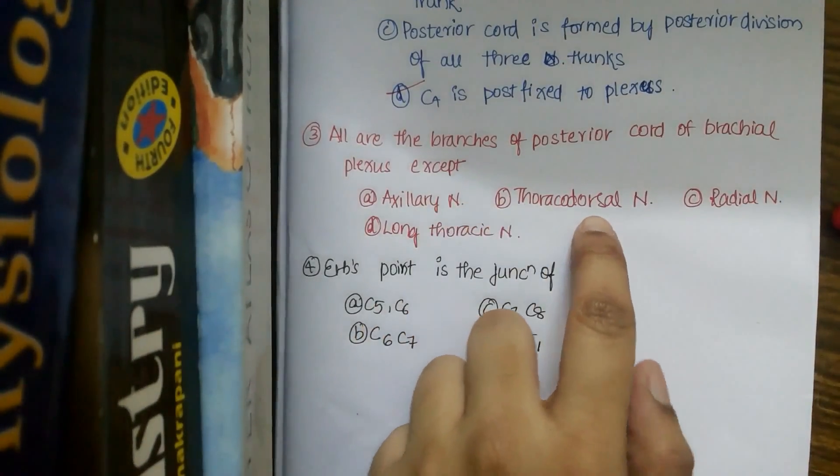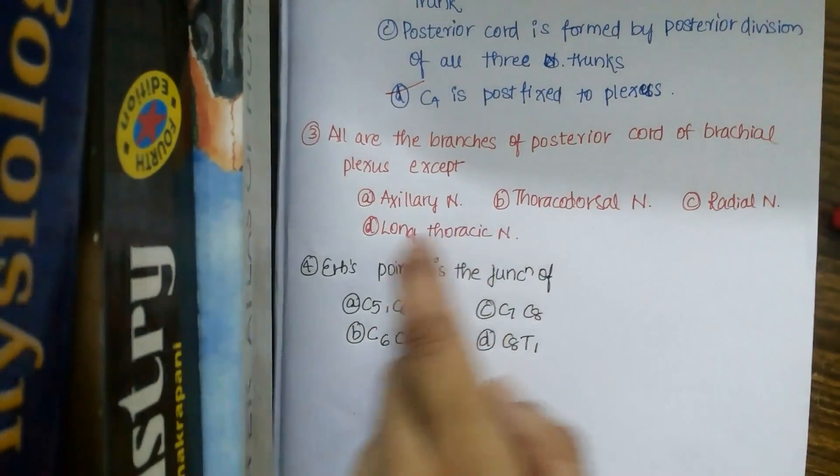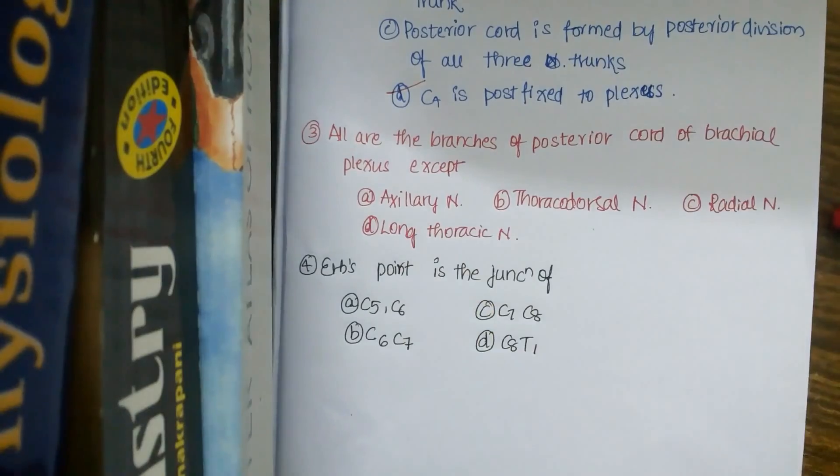What are the branches? Axillary nerve, thoracodorsal nerve, radial nerve - all these are correct. It's not long thoracic nerve. Do you remember from where long thoracic nerve came?